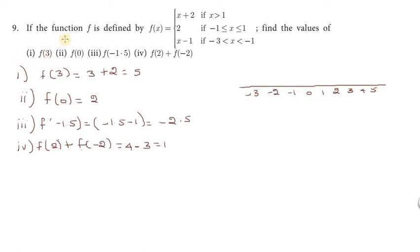First question is f of 3. Plus 3 is this, 1 is greater. 3 is given x plus 2, then 3 is given x plus 2. So 3 plus 2 is 5. Then, f of 0 is equal to this, so this is 0.